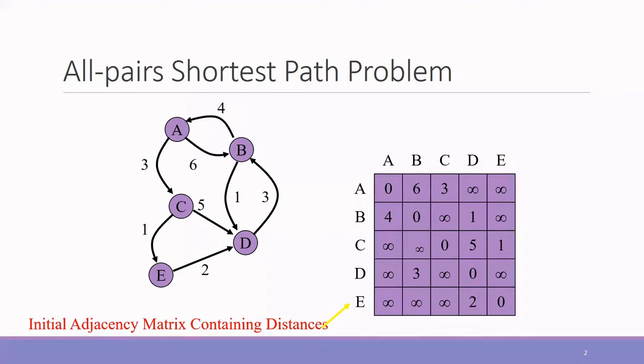Given a weighted directed graph, the all-pairs shortest path problem is to find out the length of the shortest path between every pair of vertices. So the length of the path is strictly determined by the weights of its edges, not the number of edges traversed.